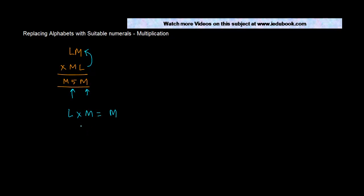Or effectively if we say L is equal to M divided by M, is equal to 1. Once L is equal to 1, what do we get here? We get 1M into M1 is equal to M5M.